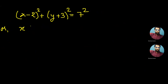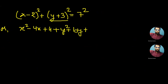Let's expand the equation using the formulas for (a - b)² and (a + b)². It becomes x² - 2·x·2 + 2² + y² + 2·y·3 + 3² = 49, which simplifies to x² - 4x + 4 + y² + 6y + 9 = 49.